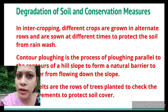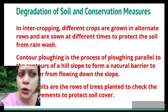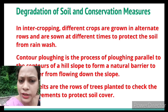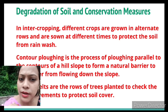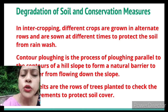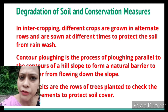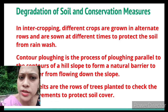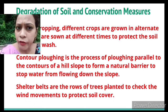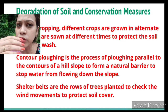Intercropping means different crops are grown in alternate rows and sown at different times. The crops in alternate rows are grown at different times to protect the soil from rain wash, so that rain cannot carry the soil away and the roots of the plants can hold the soil in place.